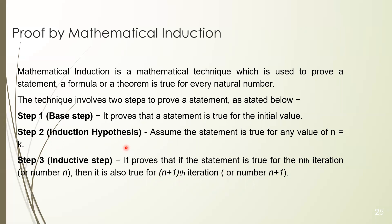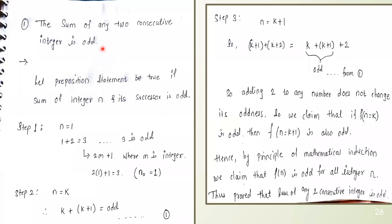We will see this with the help of an example. The first example is: the sum of any two consecutive integers is odd. Consecutive integers means integers next to each other, such as 1 and 2, or 3 and 4. For instance, 1 plus 2 equals 3, which is odd, and 3 plus 4 equals 7, which is also odd. We have to prove this statement with the help of mathematical induction.